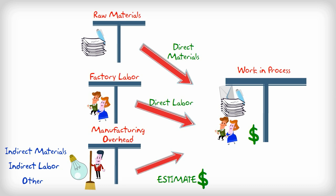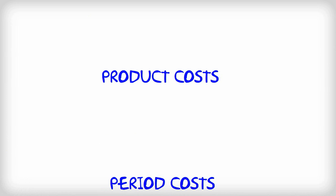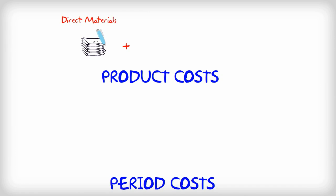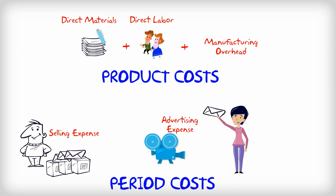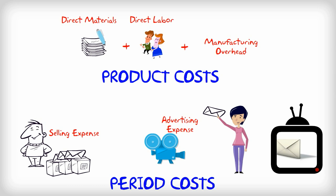You need to know how to differentiate between product costs and period costs. Product costs are the ones associated with the production, like direct materials, direct labor, and manufacturing overhead. Period costs are the selling expenses your company will incur — for example, if you have decided to pay for advertising to be made for your products. These are expensed directly on the income statement.